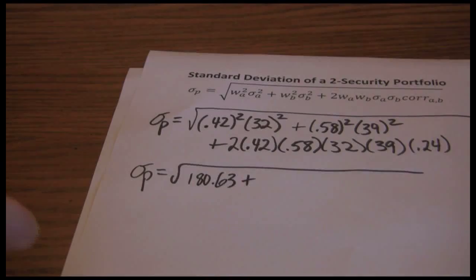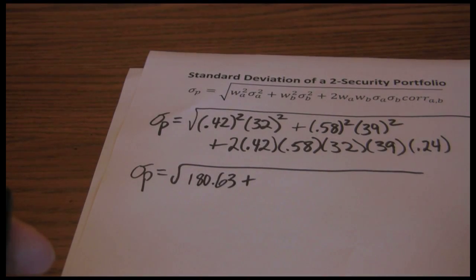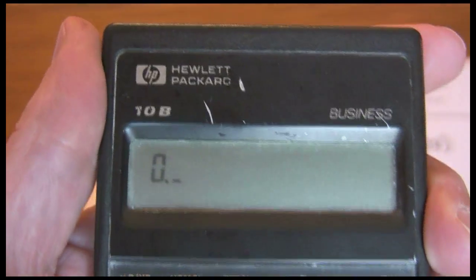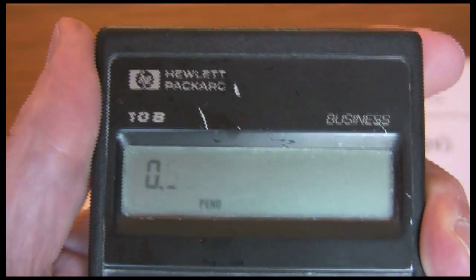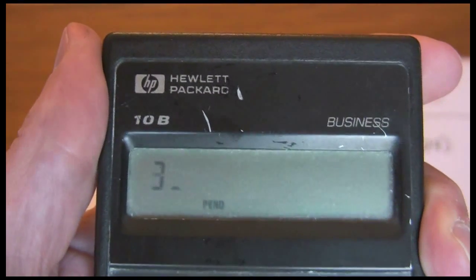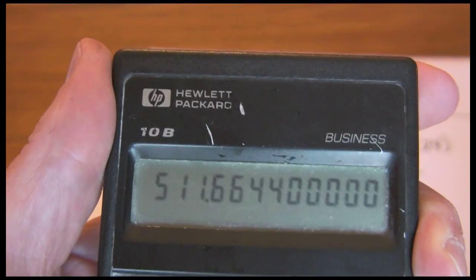Then I need 0.58 squared times 39 squared. So 0.58 times 0.58 times 39 times 39 gives me 511.66.